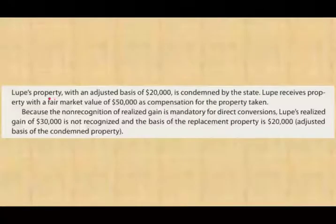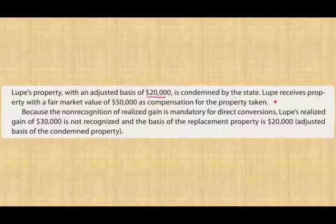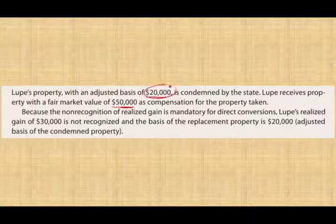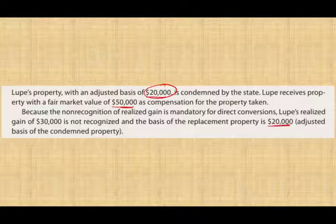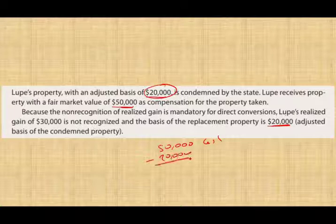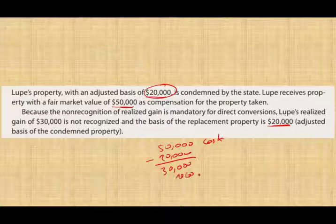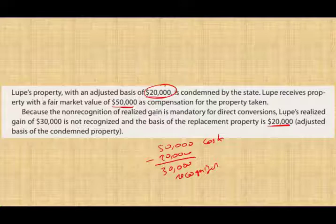Consider this final example: Lupe's property with an adjusted basis of $20,000 is condemned by the state. Lupe receives property with a fair market value of $50,000 as compensation. Because non-recognition of realized gain is mandatory for a direct conversion, Lupe's realized gain is not recognized and the basis of the replacement property is $20,000. However, if the state had instead given Lupe $50,000 in cash and Lupe did not use it to replace the property, Lupe would have a $30,000 gain that is both realized and recognized.